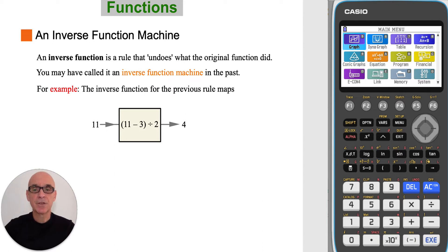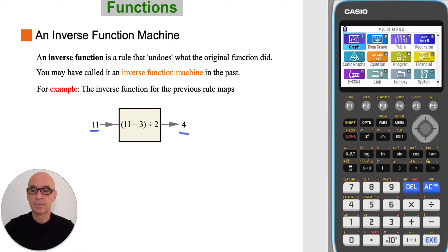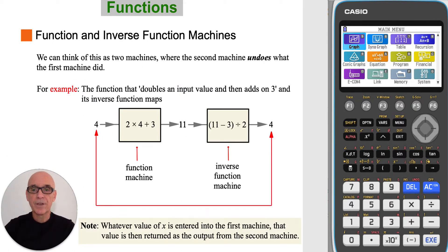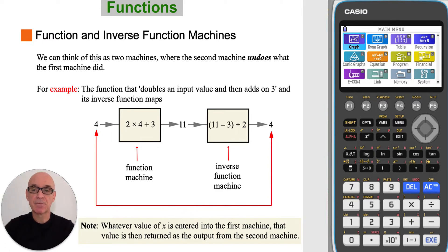An inverse function is a rule that undoes what the original function did, and you may have called it an inverse function machine in the past. The inverse function for the previous rule would map 11 back to 4. We can think of this as two machines where the second machine undoes what the first machine did. So whatever value is entered into the first machine, that value is then returned as the output from the second machine.